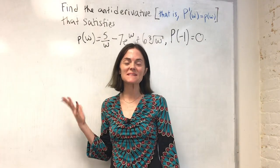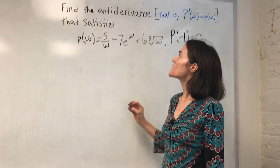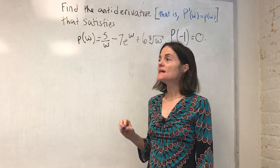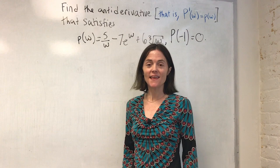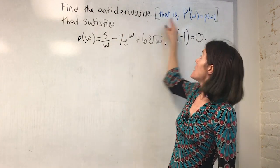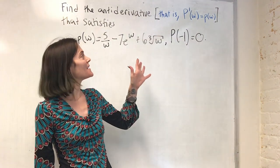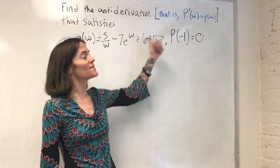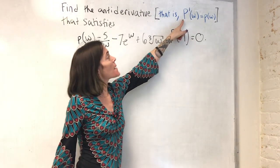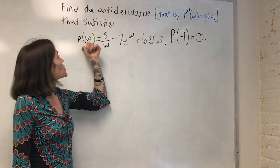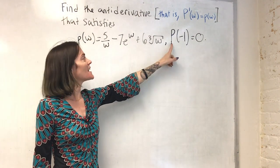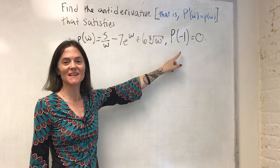This next problem is a little bit different. We want to find the specific antiderivative. So our answer will not have a plus c in the end. That satisfies, well, here, if you look, I'm using capital P for the antiderivative and little p for the function, so capital P prime is little p.